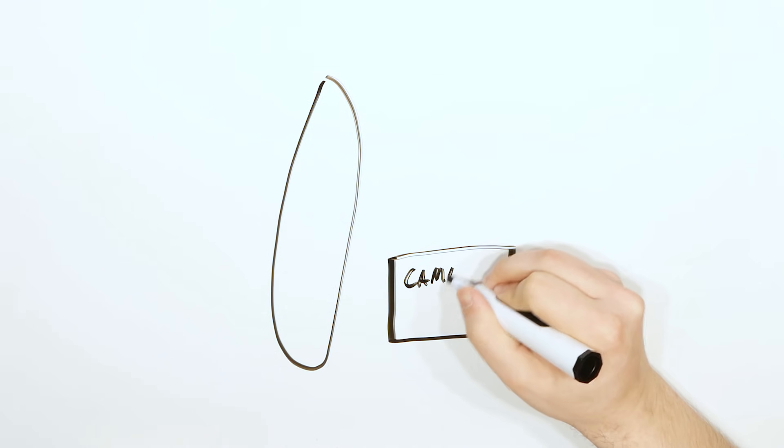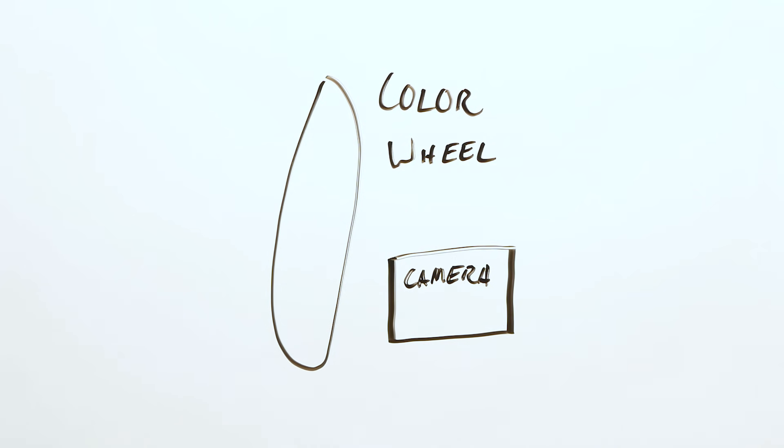If you do this fast enough, persistence of vision will kick in and you won't notice it. A similar disk was placed in front of the camera tube in the studio, so that it would only see red, then green, then blue light. So long as you can synchronize the camera and TV, you could transmit a full color image.